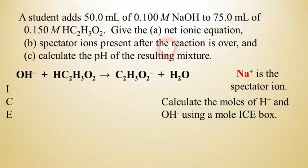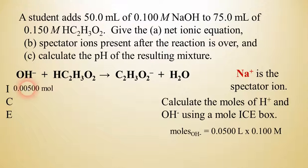So we're going to set up the ICE box here. And to find the moles of hydroxide, we're going to take 0.100 molar times 0.05 liters. And so when we do that, we find that the answer is 0.00500 moles. So that's how many moles of hydroxide we have.